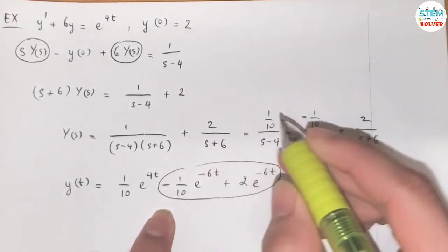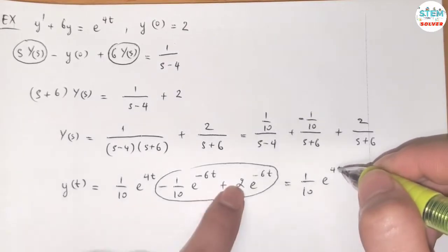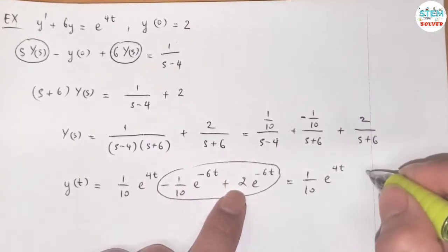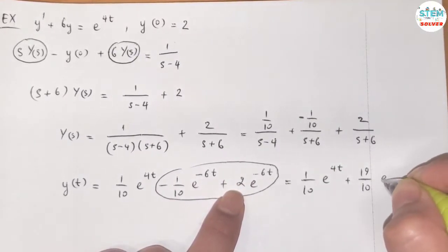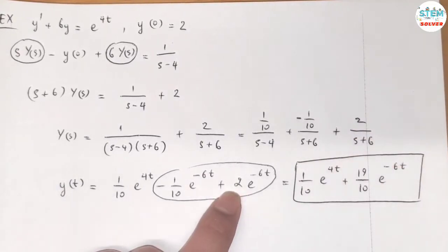Now, simplify this, then we get E to the 4T over 10 plus 19 over 10 E to the negative 6T. So this is your final answer eventually.